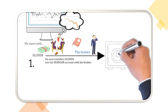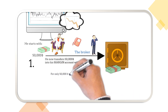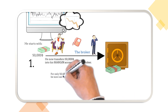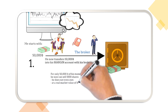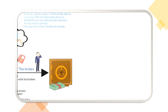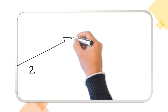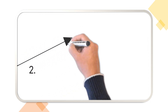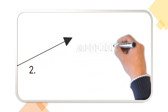And now the fun can start! With only fifty thousand dollars of his own money, he can sell one thousand shares he doesn't even own at a market value of one hundred thousand dollars. In the second phase of the short sale, he will now need the stock exchange.